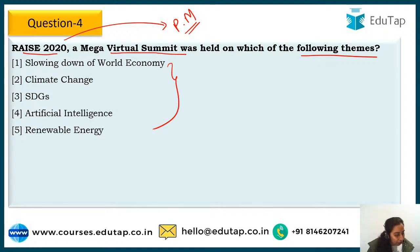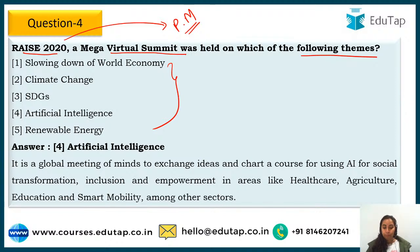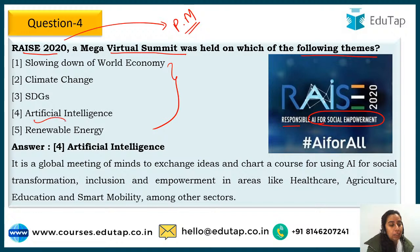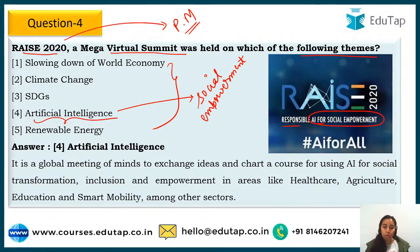The answer is Artificial Intelligence — that is correct. RAISE stands for Responsible AI for Social Empowerment. We are talking about using artificial intelligence for social empowerment. At this summit, the call was 'AI for all' — a global meeting of various people and minds who exchange ideas on how AI can be used for social transformation, inclusion, and empowerment.